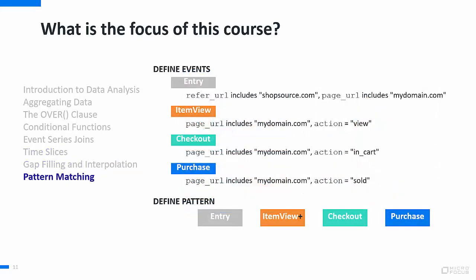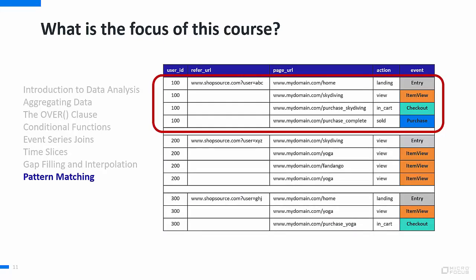Vertica also includes functionality that allows you to identify patterns of behavior in your data. You define the events that you are looking for and the order of events. Apply this pattern matching functionality to your data to find only the data that matches the defined pattern.